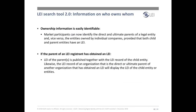The new version 2.0 of the LEI search tool also allows the easy identification of ownership information. To recap, the business card information available with the LEI reference data — such as the official name of a legal entity and its registered address — is referred to as Level 1 data, providing the answer to who is who. In addition, the LEI data pool includes Level 2 data that answers the question of who owns whom. Provided that both child and parent entities have an LEI, market participants can now identify the direct and ultimate parent of a legal entity. The LEI of the parents is published together with the LEI record of the child entity, and likewise the LEI record of a parent organization will display the LEI of its child entities.